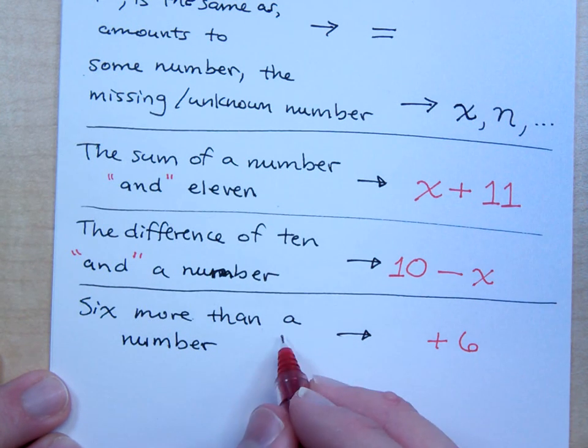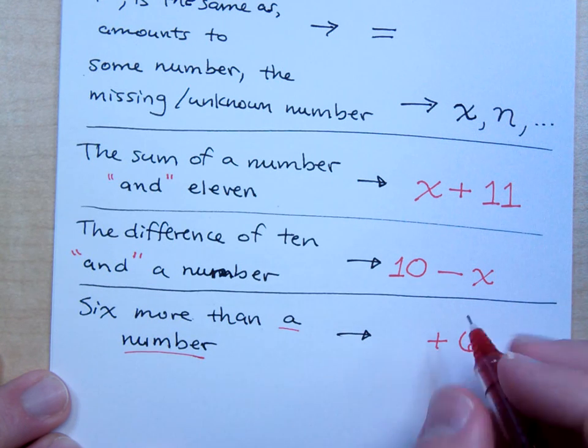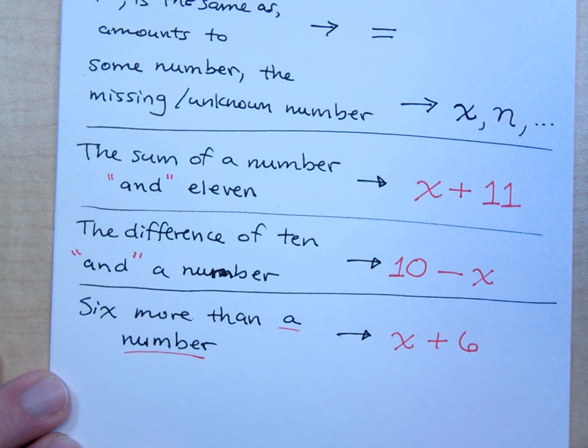You're adding six to a number. Six more than means you're adding six to a number. So Dennis, if I say that you make six dollars more than me, that means you would take my money, say X, and you would do what?